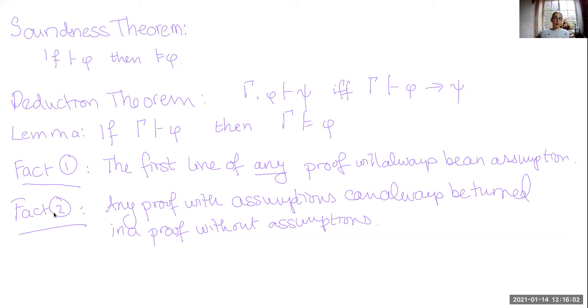The only rule that allows you to write down a formula without referencing something earlier is the assumption rule. When you get started, you don't have any other lines to refer to. In order to actually write something down, you have to use assumption.